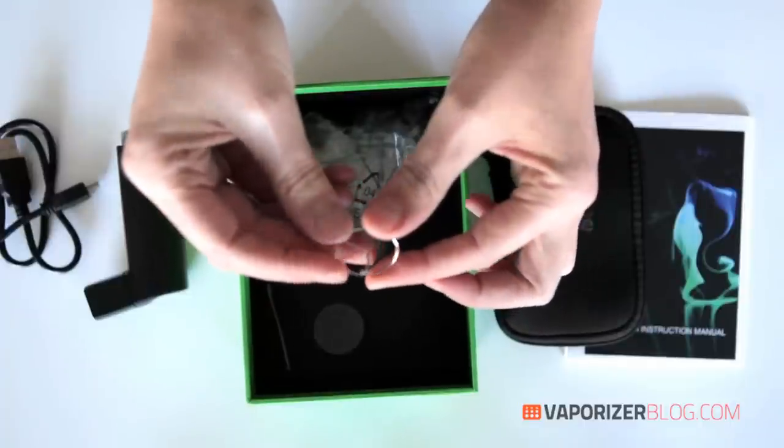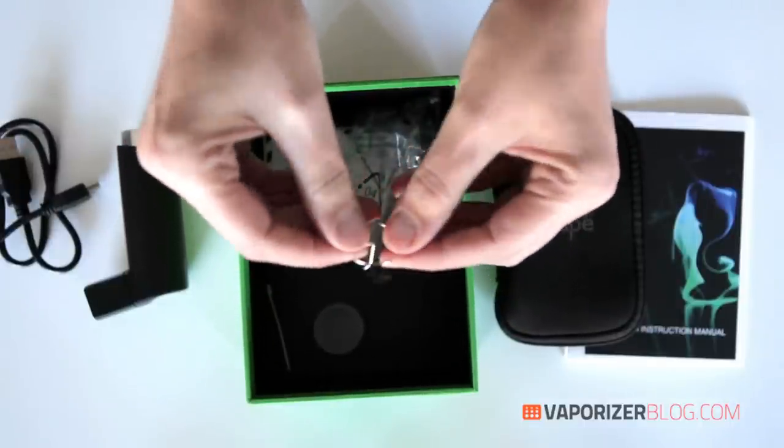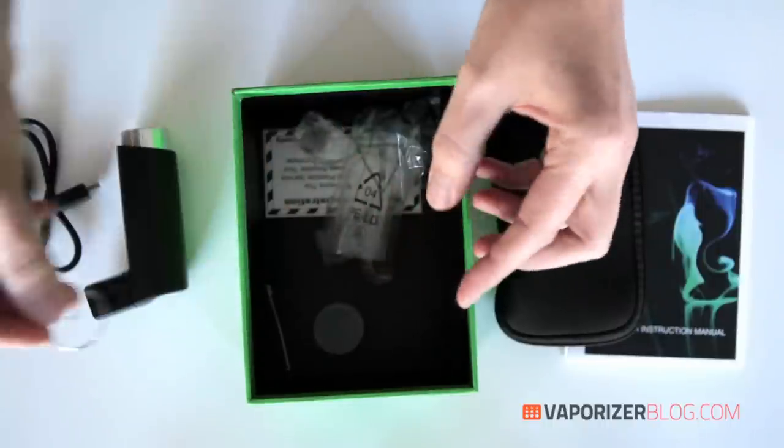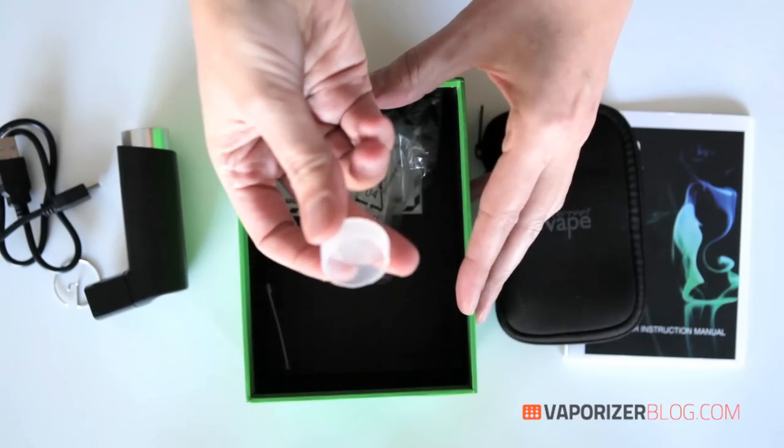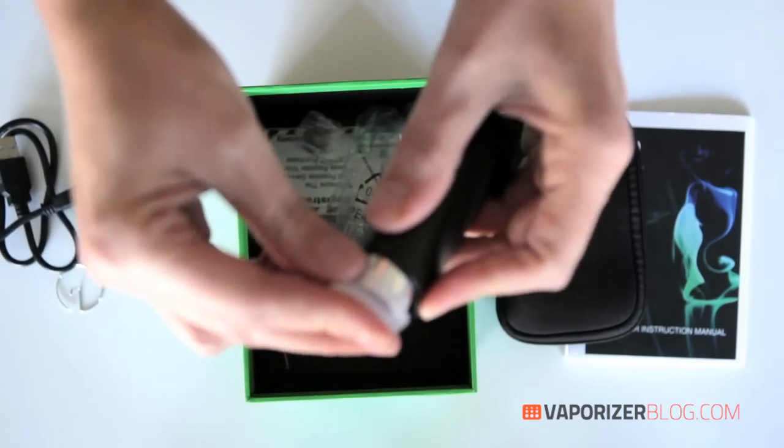This is something that is interesting. It's a removable stir tool and that means you don't even have to open the unit up for that to work. Here we have a silicone heat shield for the heating chamber part.